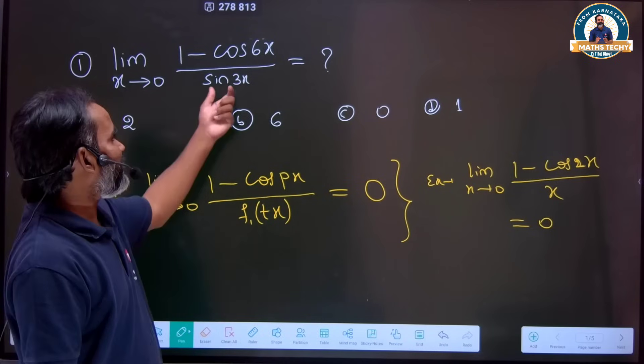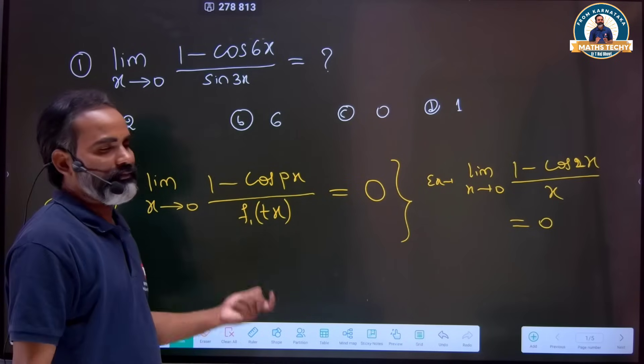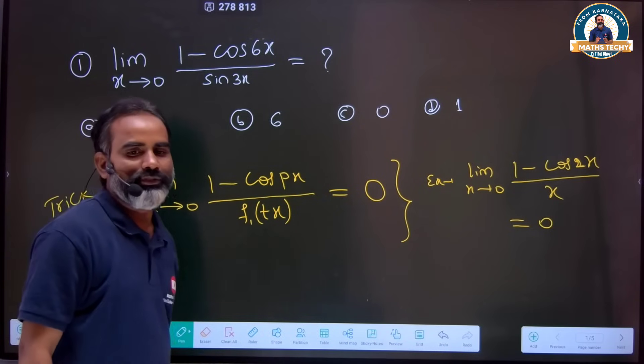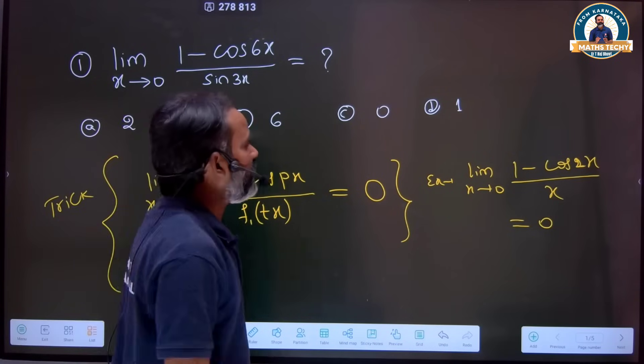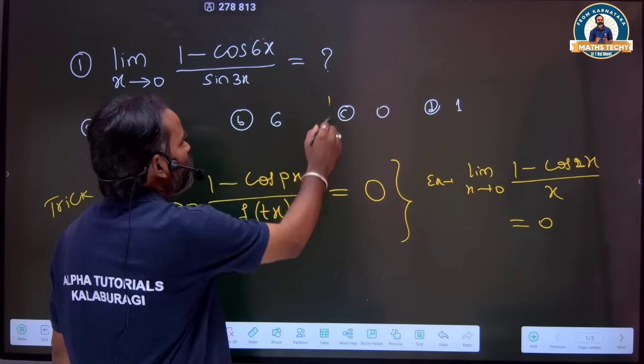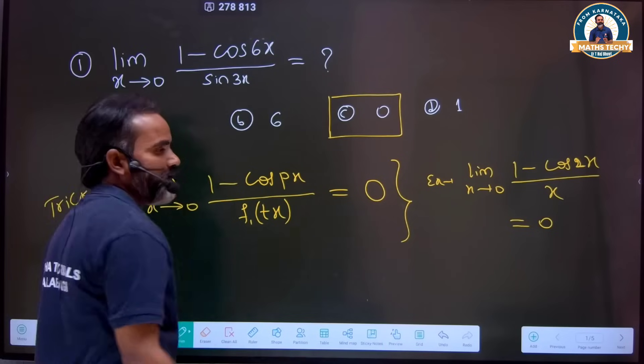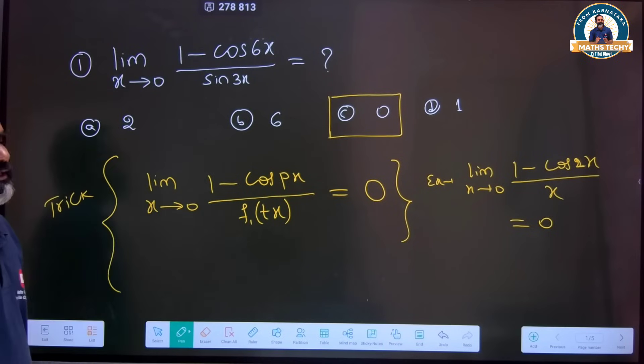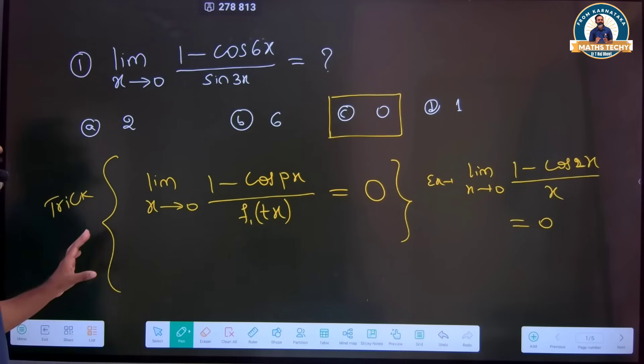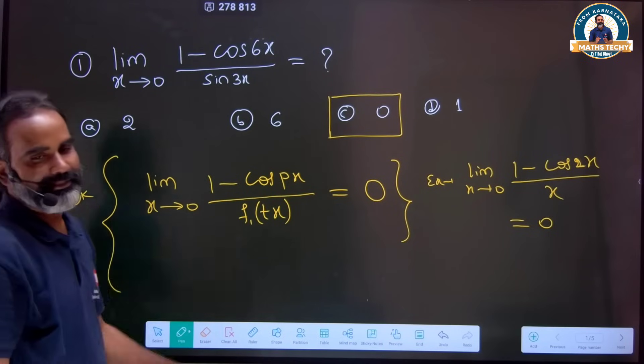For example, limit x tends to 0 of (1 minus cos 2x) divided by 2x: if you take x tends to 0, the answer will be equal to 0. So with a single function in the denominator, you can change the method directly to 0. Option C is correct.